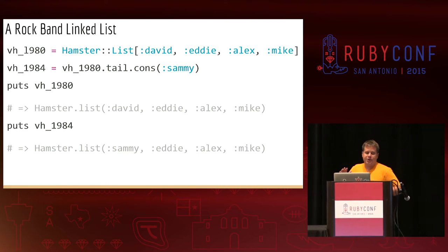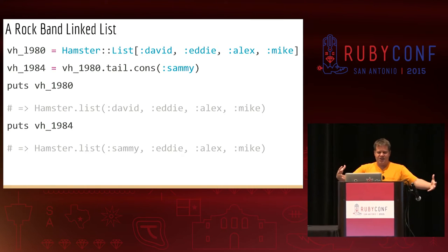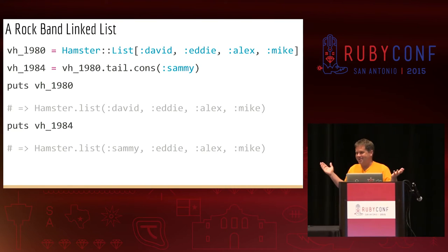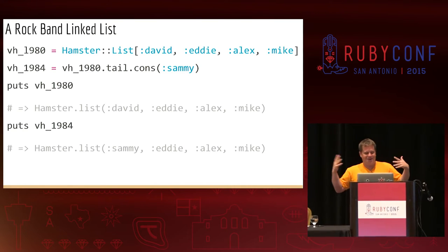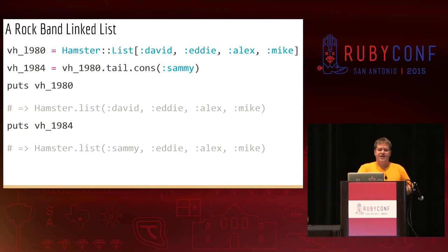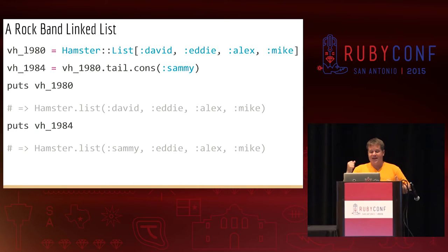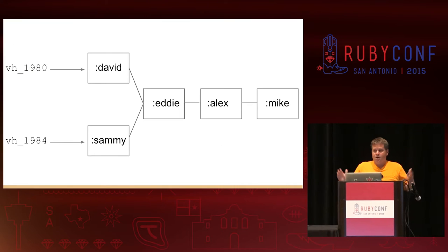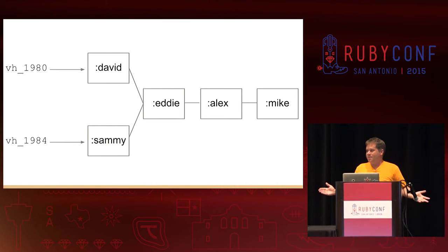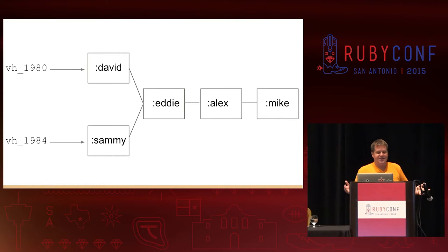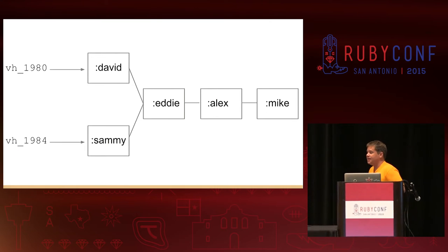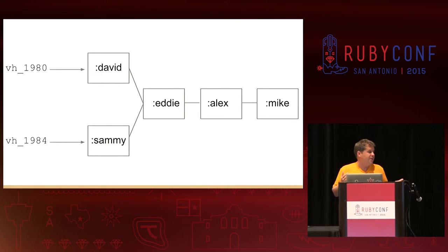Another example is my rock band linked list. I've got VH1980, which consists of David, Eddie, Alex, and Mike. That's a reference to Van Halen — they swapped out lead singers in 1984. I take VH1980.tail.tail, which gives me everything after the head — Eddie, Alex, Mike — and I cons Sammy onto the front. So I swapped David with Sammy. Now in memory I've got two references, and I'm starting to sort of build up a tree. To each of these references it looks like a list, because you can only traverse one direction, but I'm basically building up a linked tree.